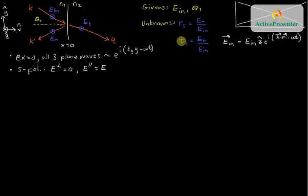We have two unknowns, R_S and T_S. We need two equations. So, the first equation is going to be, what we do for the first equation is we look at the total electric field E right here at the interface.